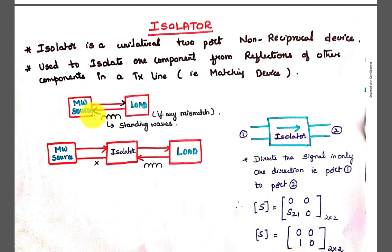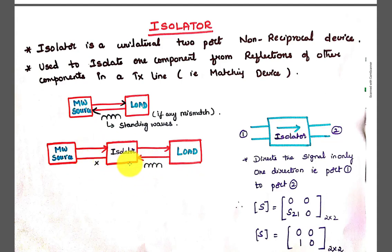In order to properly match the load with the microwave source and to eliminate standing waves, we place the isolator between the microwave source and the load. The isolator directs the signal in only one direction — the forward direction. In the backward direction, if the signal comes from the load to the microwave source, the entire standing waves are absorbed by the isolator. That is the purpose of using the isolator in a transmission line.